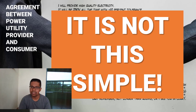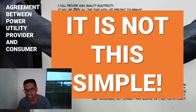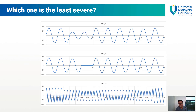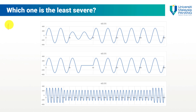The agreement between the two parties is actually much more complicated than a simple dialogue. To discuss this, I present three different voltage waveforms and ask: which one is the least severe? To solve this, we need to extract two pieces of information — the magnitude and duration — from all three waveforms.